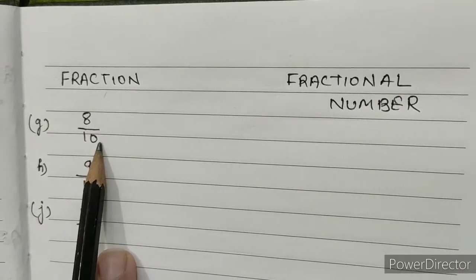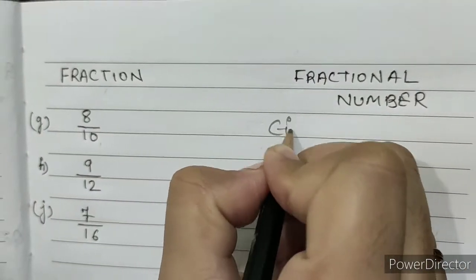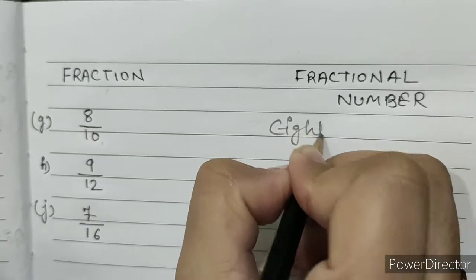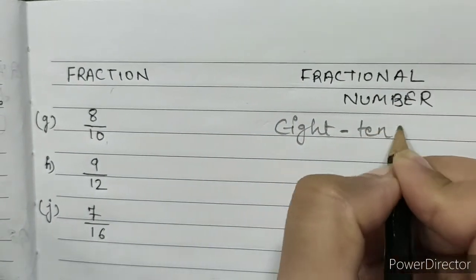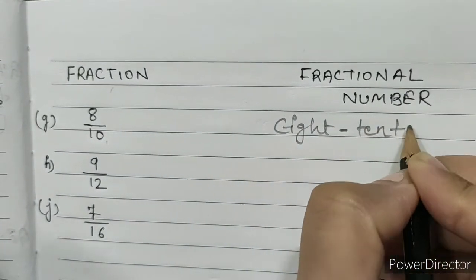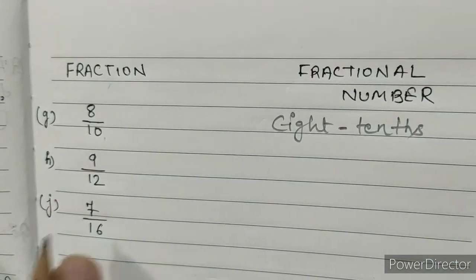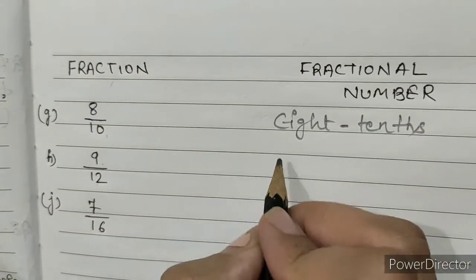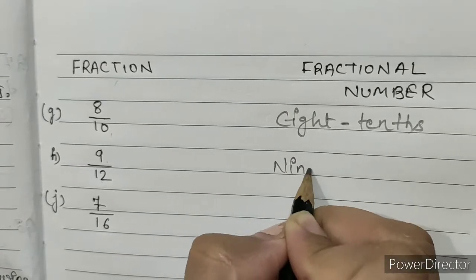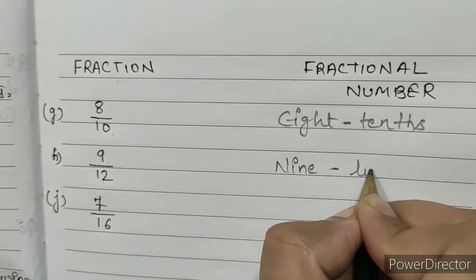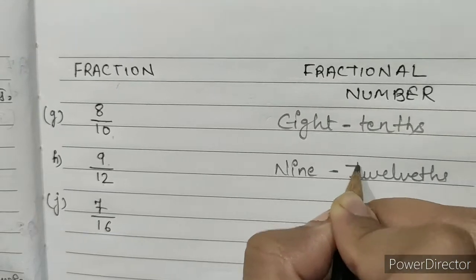Fraction 8 by 10: we will write eight tenths. Fraction 9 by 12: we will write nine twelfths.